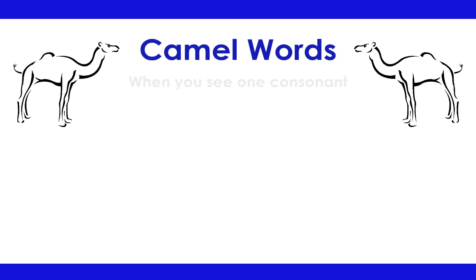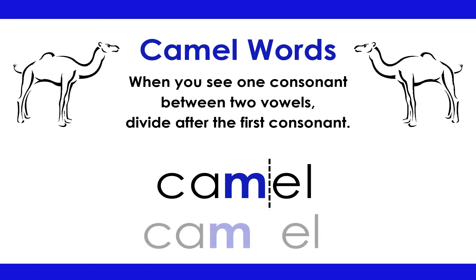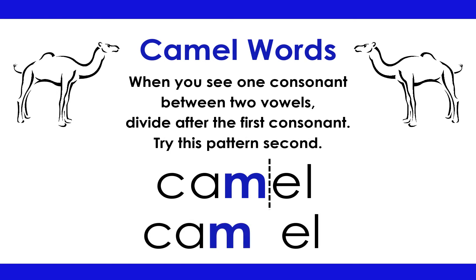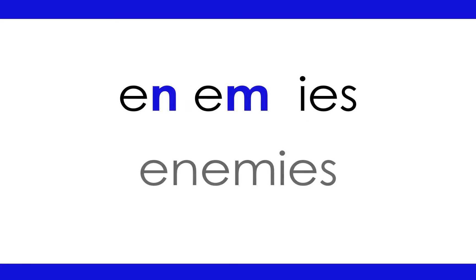Camel words. When you see one consonant between two vowels, divide after the first consonant. Try this pattern second. Camel: Cam-el, two vowels. Practice words: Body. Shadows. Enemies.